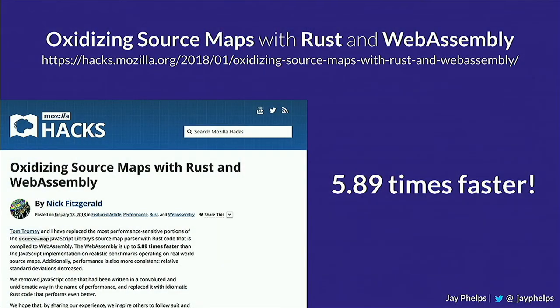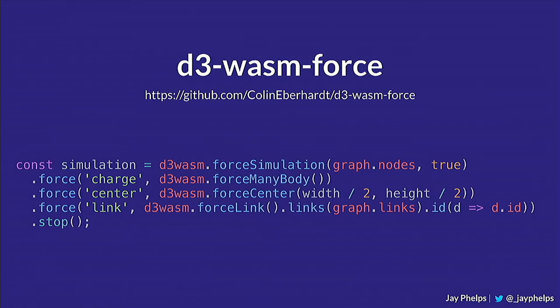You'll likely be consuming WebAssembly either without even knowing it or knowingly. WebAssembly is very early, but there are already production use cases. One is source map support — Mozilla has a source map generation library used by many projects. They ported it from JavaScript to Rust, compiling that Rust to WebAssembly, and saw an over 5x improvement in speed — 5.89x — which is a very non-trivial improvement. As browsers start to actually optimize WebAssembly itself, that will just naturally get faster.